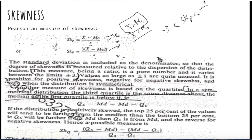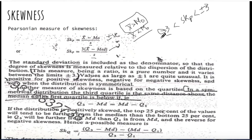Depending on the value — for example, minus three means your data is highly skewed, whereas minus one means your data is less skewed and negatively skewed. The sign tells you the direction of skewness — positive or negative — while the magnitude tells you the extent of skewness in your data.